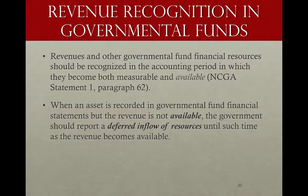For instance, with a property tax levy of one million dollars, if during the 60-day period of availability after fiscal year end the government collects $900,000, and the other $100,000 is expected to be collectible but hasn't been collected during that window, it is not considered available. The government will report $900,000 of property tax revenue and the other $100,000 as a deferred inflow of resources. When that amount is collected in the future and becomes available, it will be recorded as property tax revenue and the deferred inflow will be eliminated.